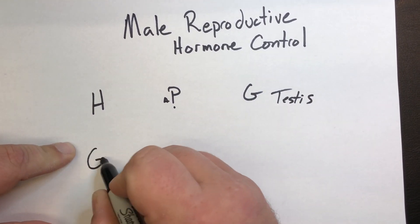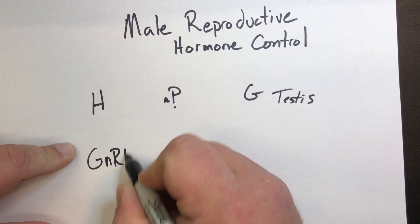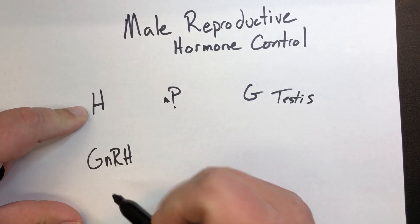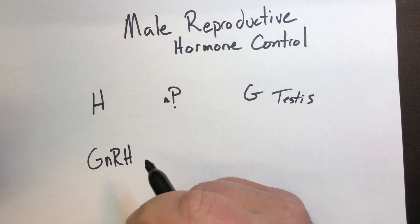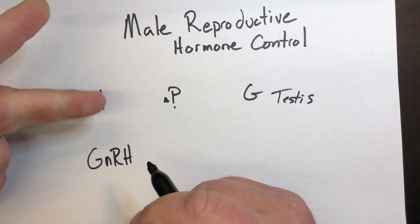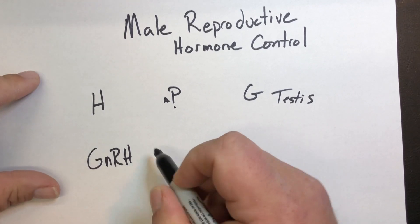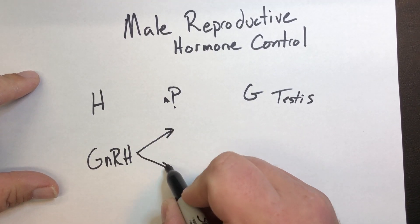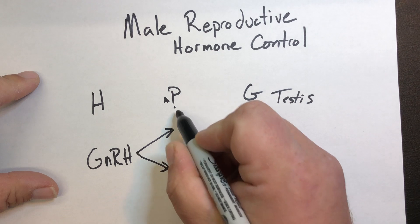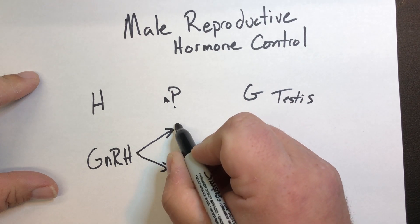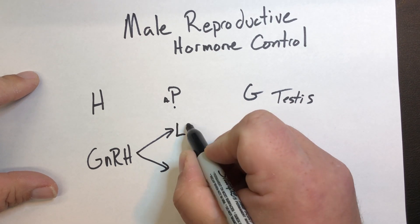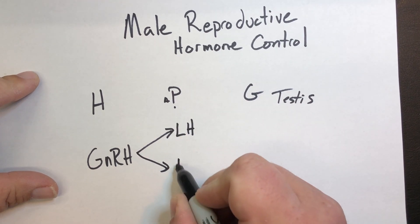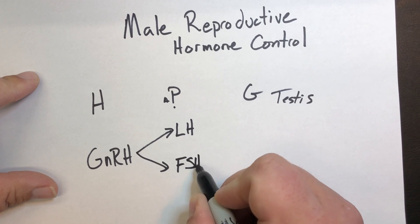GnRH is the hypothalamic hormone. Remember, for every hormone: target, action, regulation. Target: anterior pituitary. It has two actions — it causes the release of LH and FSH.